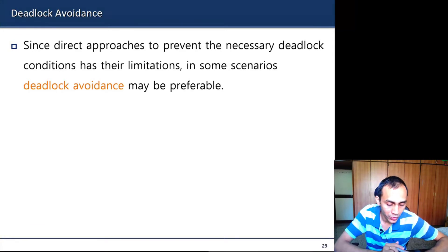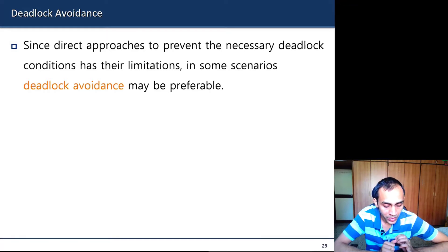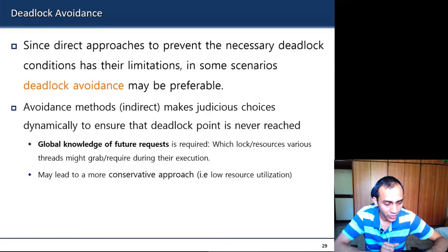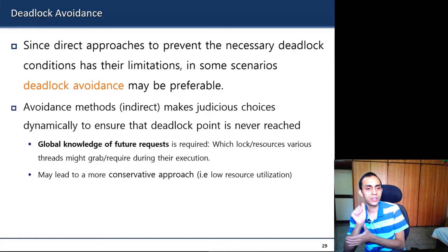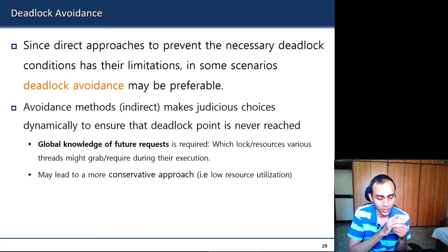Each prevention approach had its own limitations. Another strategy is deadlock avoidance — although the names sound similar, avoidance takes a more indirect approach. Instead of directly attacking the four conditions, you dynamically decide by taking a priori knowledge about which processes will run and how many resources of each type each process will need throughout its execution.